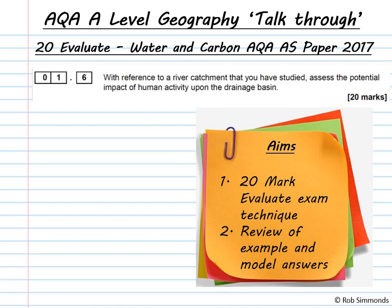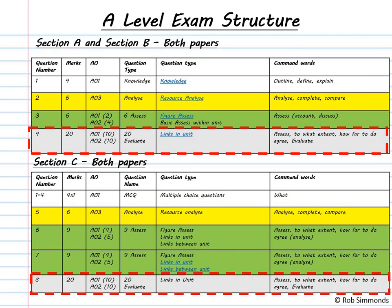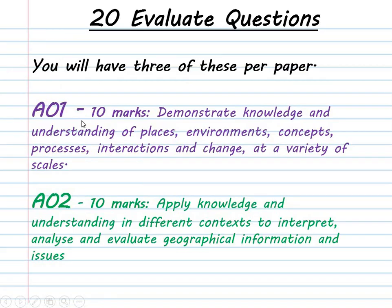Just to remind you, this question is a 20 mark evaluate question, so 10 marks for AO1 and 10 marks for AO2. AO1 is your knowledge and understanding of place, concepts, processes, and understanding change. AO2 is being able to apply your knowledge, analyze, conclude, and evaluate the points you're making.